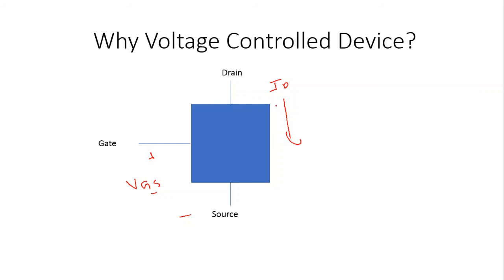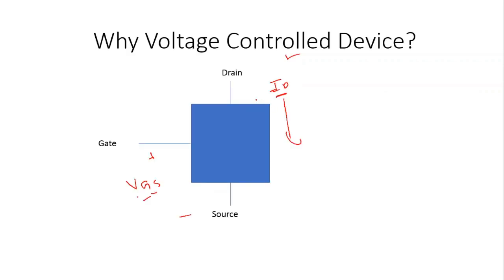Because the input voltage between the gate and the source terminal controls the output current ID, that is why it is called the voltage control device. In the case of the BJT, it was a current control device where the input base current controls the output collector current. So this is a voltage control device and the BJT was a current control device. That's all for today, thank you.